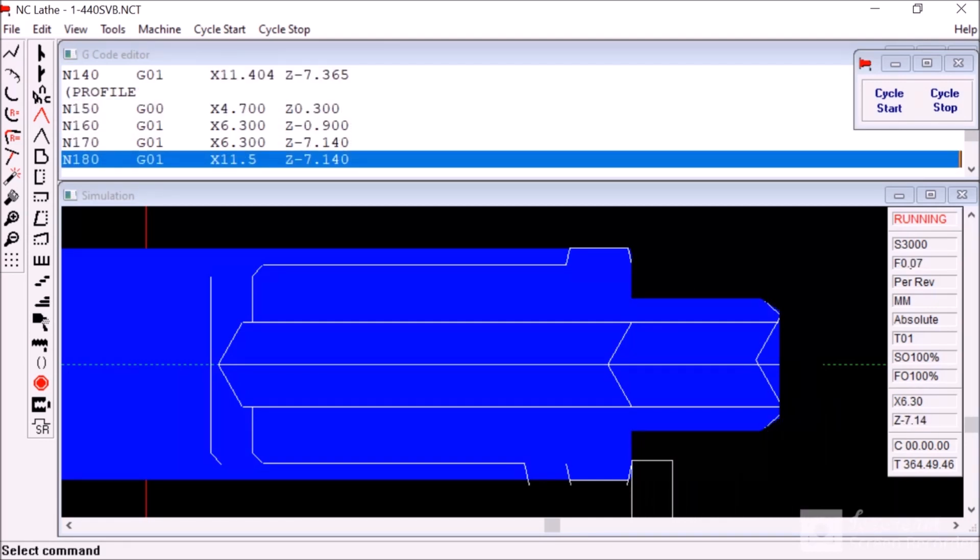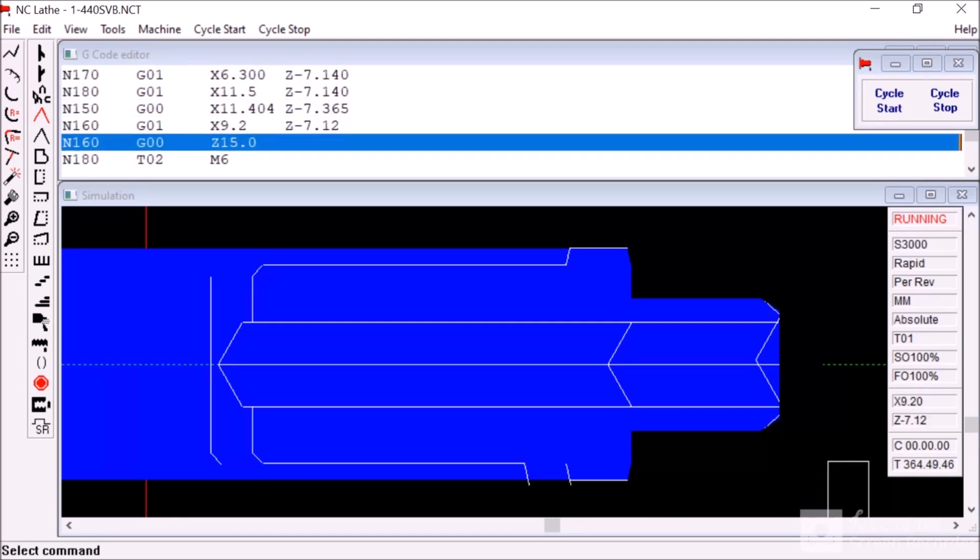Here you can see that reverse chamfer cut, it just stops the burr being quite so bad on the edges of the hex.